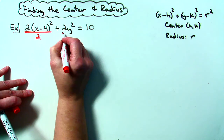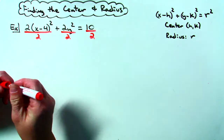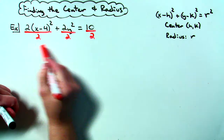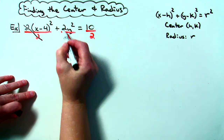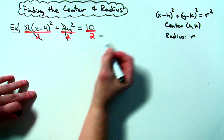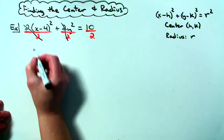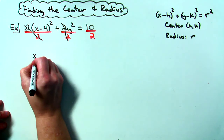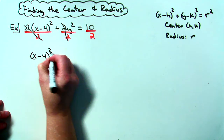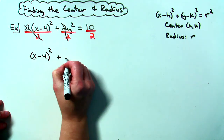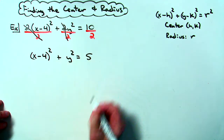So I would divide by 2, divide by 2, and divide by 2. You've got to remember to do it everywhere. The 2s cancel out, and 10 divided by 2 gives me a 5. So simplifying, I then have x minus 4, quantity squared, plus y squared, equals 5.